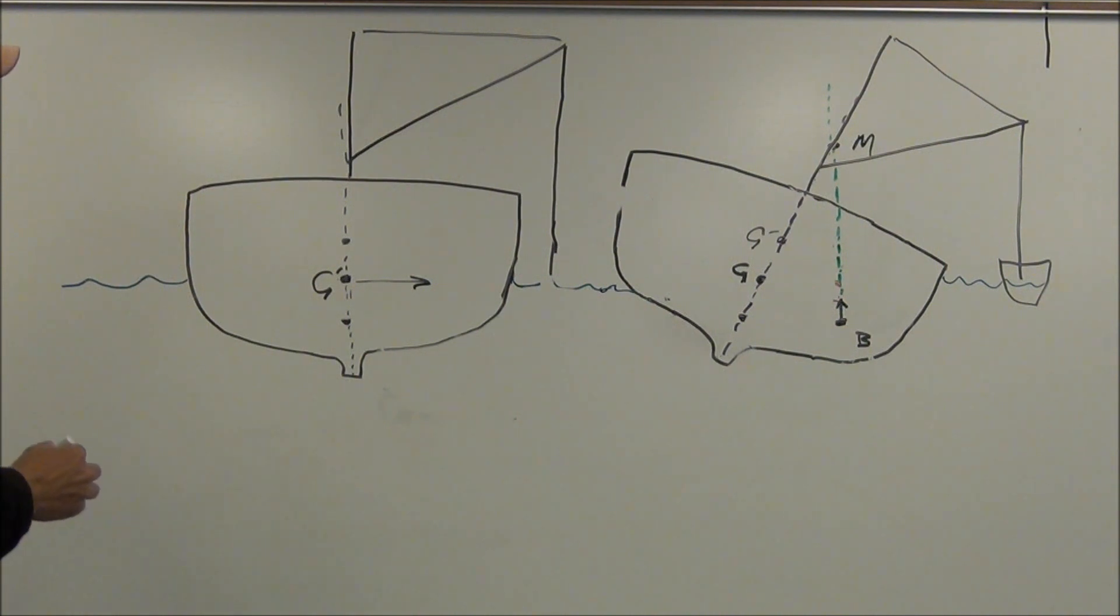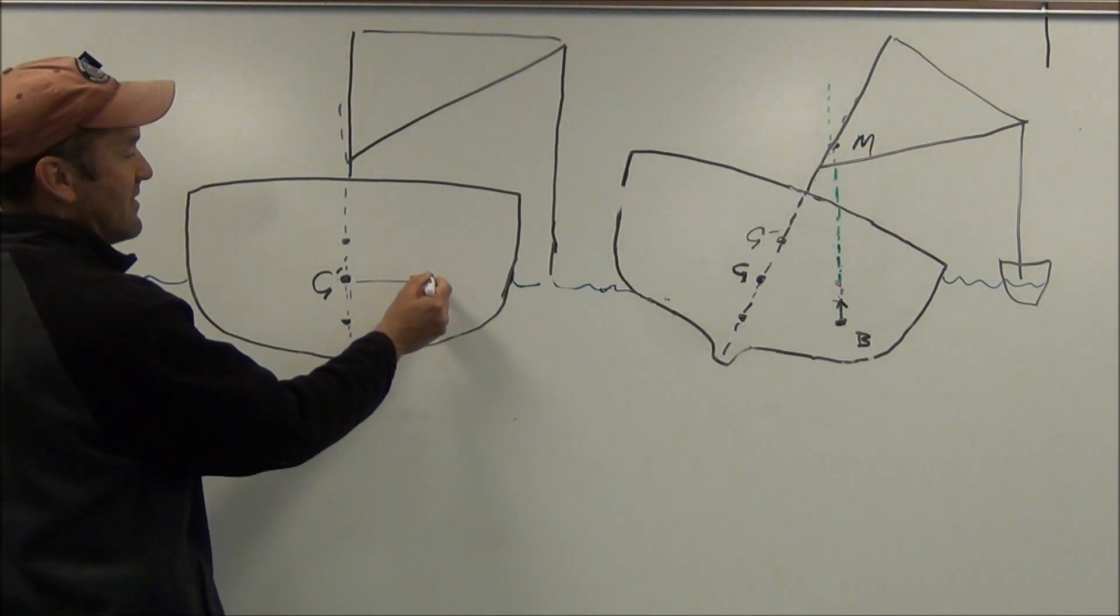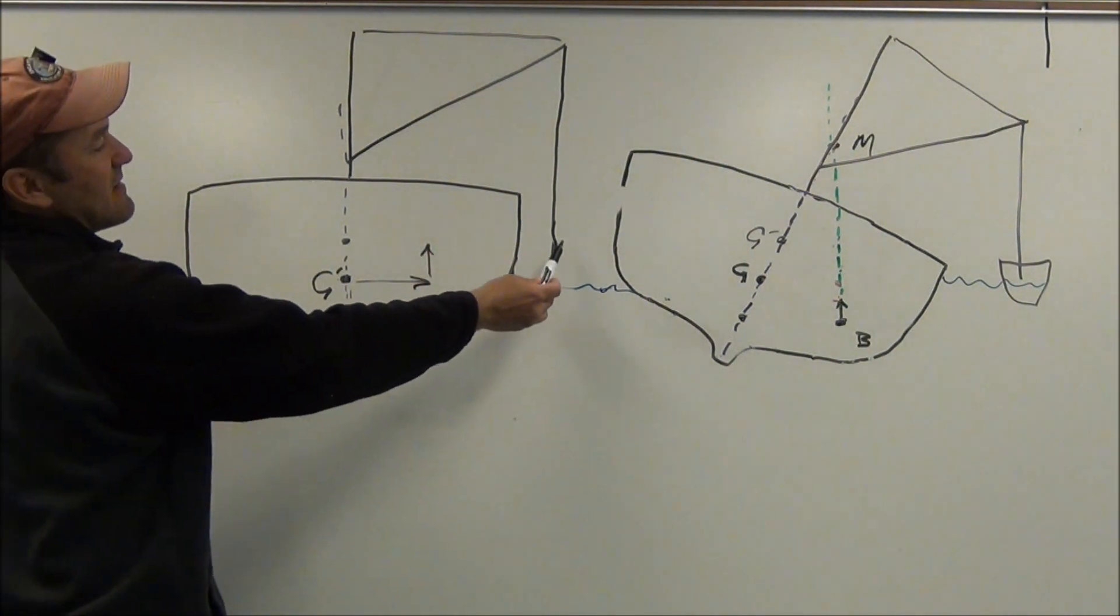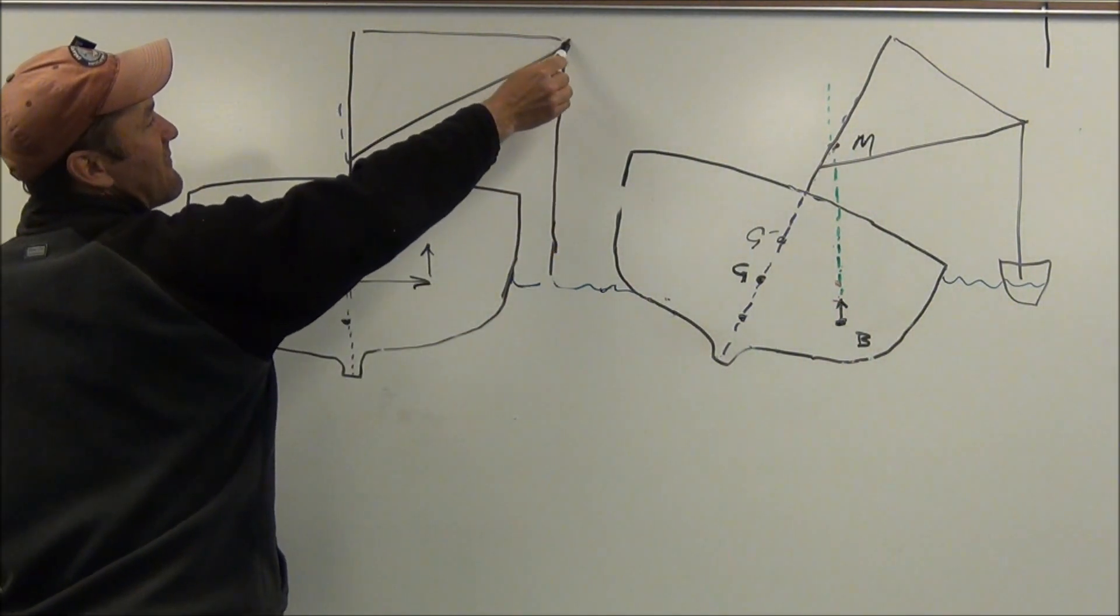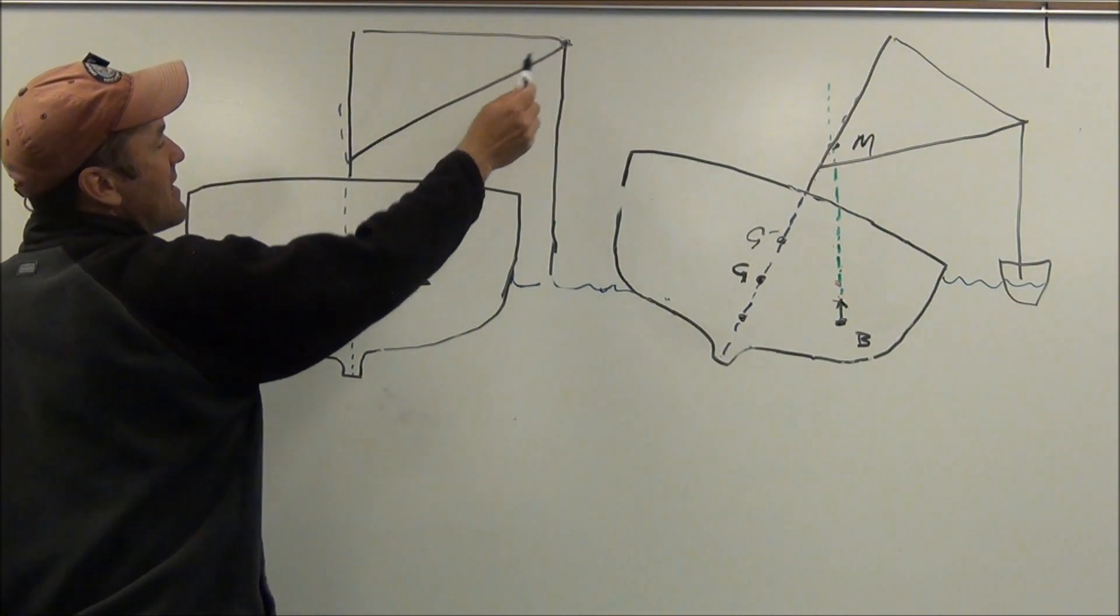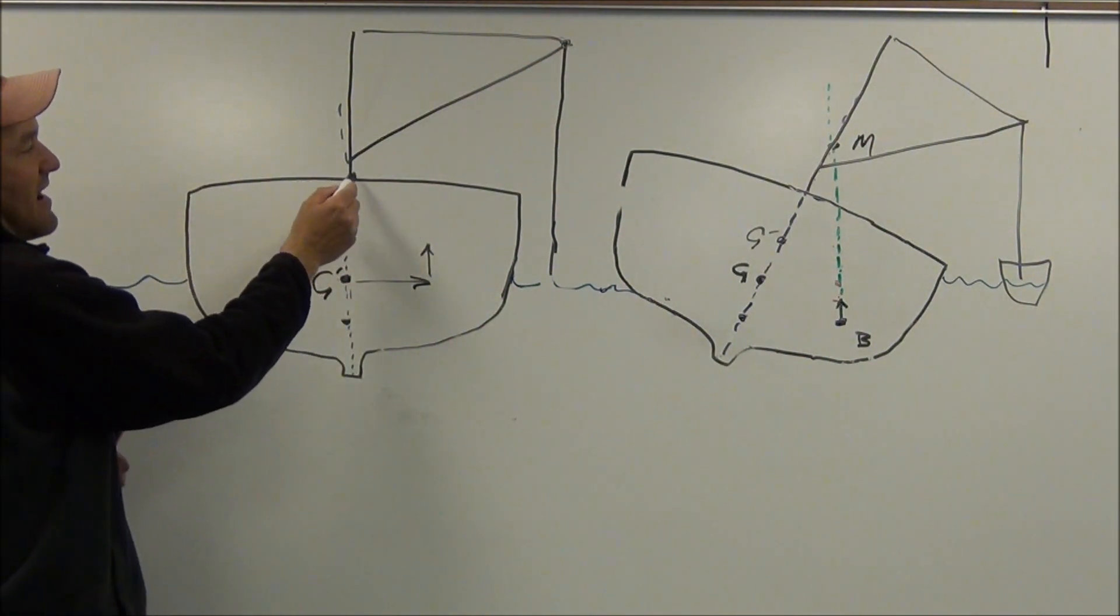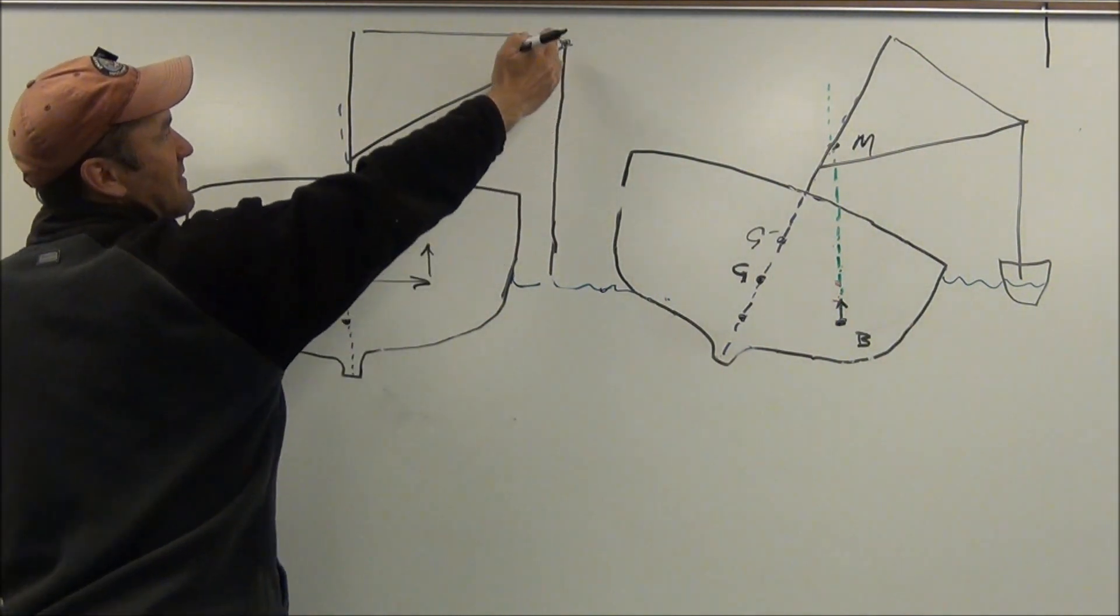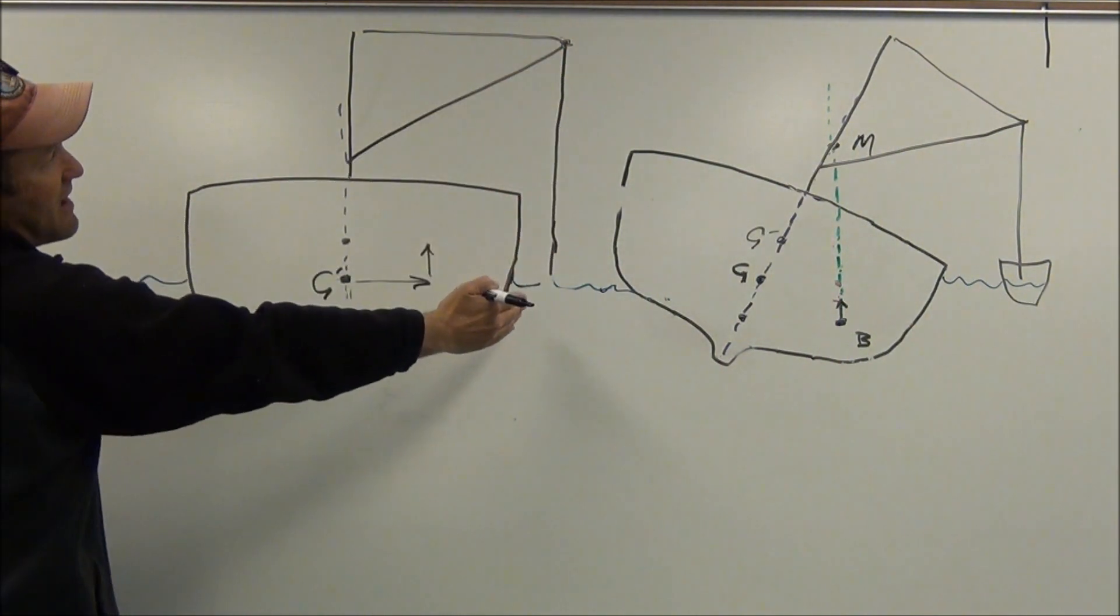But it is also raising the center of gravity because the weight is hanging from the end of our boom right here. The weight is not concentrated here. It's out here. So you have this horizontal shifting of the center of gravity because it's hanging out over the edge.